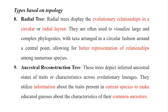The last type is the ancestral reconstruction tree. We don't know about the distant common ancestor which previously existed but is no longer available. By evaluating the current species, we dig back to find the pre-existing species which are the common ancestors for currently available species.